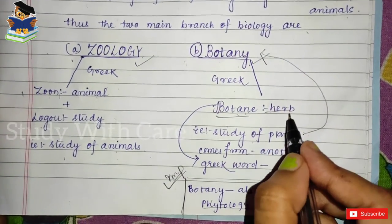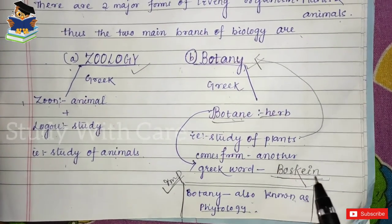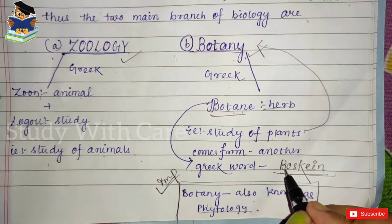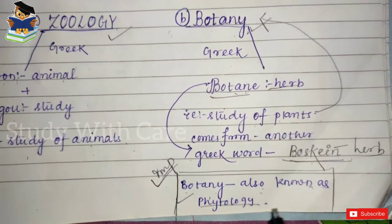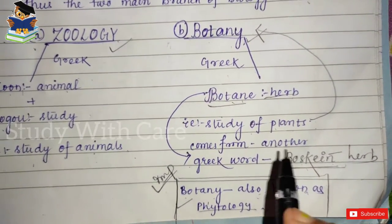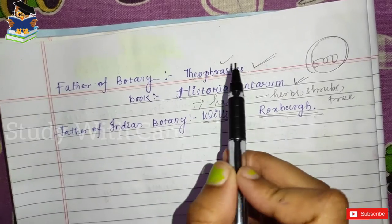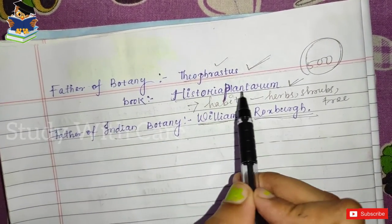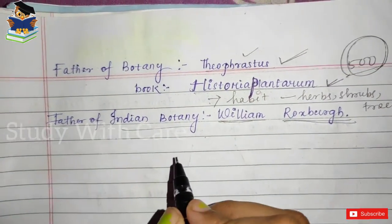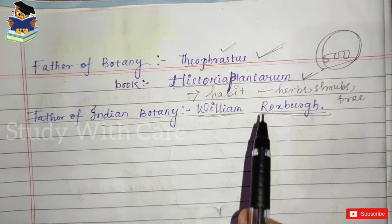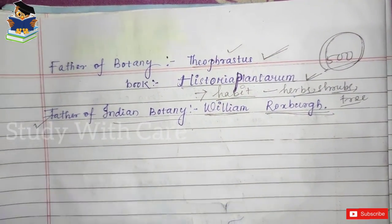Botany comes from the Greek word botan, meaning herb, so botany is the study of plants. Botan also derives from boscan, which also means herb. Botany is also known as phytology. The father of botany is Theophrastus, who wrote Historia Plantarum, which described 500 species based on morphological characters such as habit — herbs, shrubs, trees, etc.